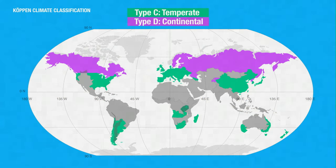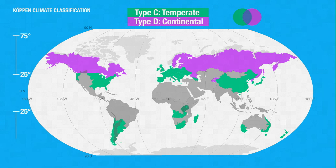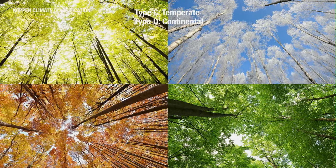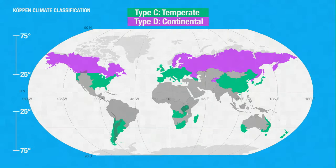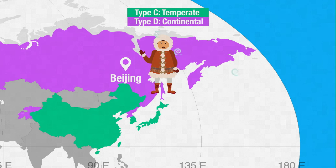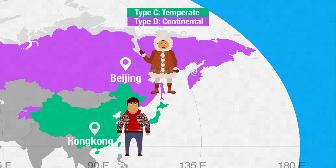Type C and D climates are called temperate and continental climates. These two groups are often combined as many features overlap. The temperate and continental climates take up a big portion of the globe, between latitudes 25 and 75 degrees north and 25 and 75 degrees south. Both of these climate types experience dramatic changes in temperatures throughout the four seasons. However, the average temperatures in the coldest months in continental climate locations, like Beijing, is much colder than temperatures in temperate climate locations, such as Hong Kong.